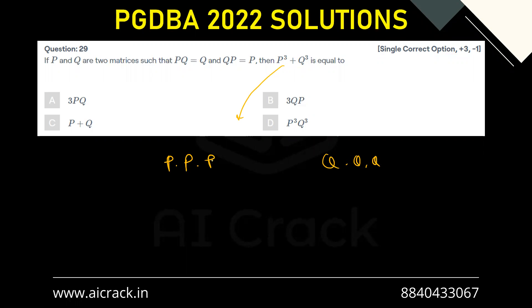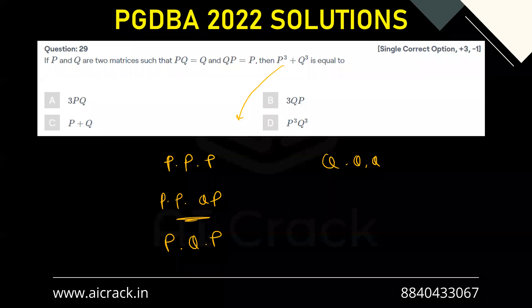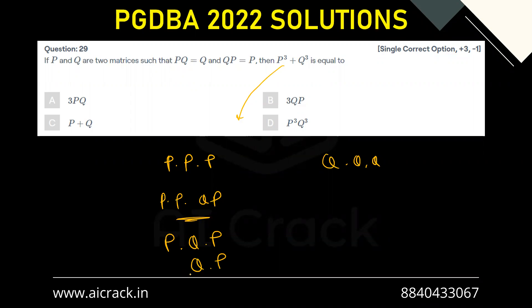So P can be written as QP, right? So P dot P dot P becomes QP dot P dot P. Now we can convert PQ into Q, so that would give me P dot Q dot P. Now again, PQ can be converted into Q, that would become QP. Now QP can be written as P again. So basically, P cubed was nothing but P only.